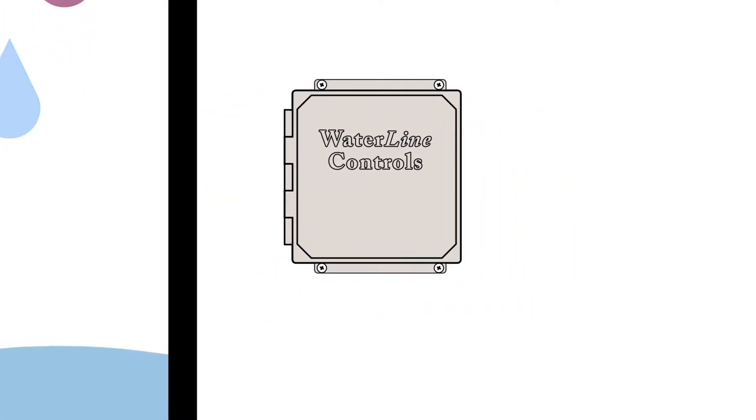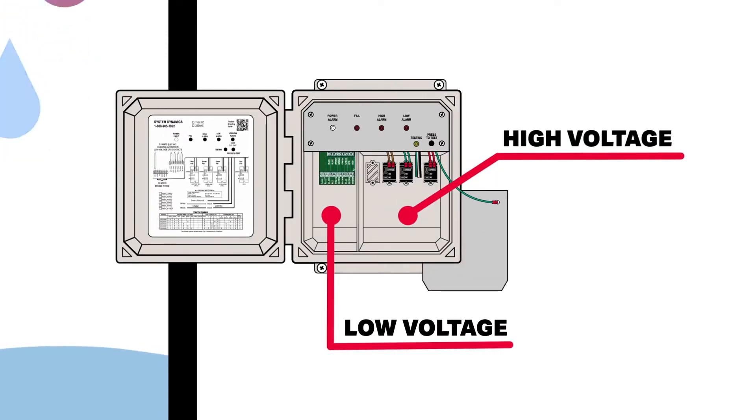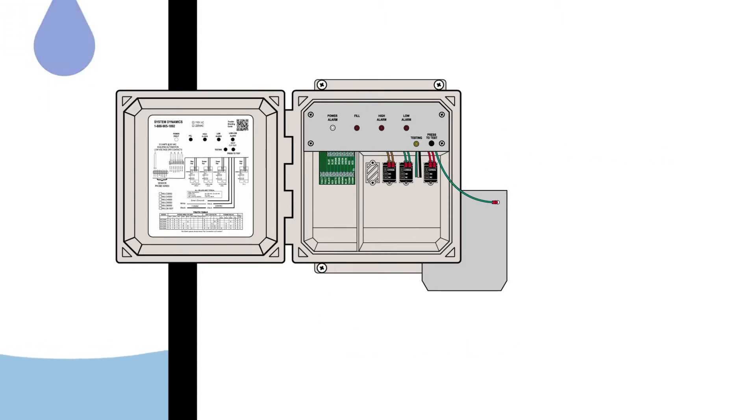When running metal conduit, keep note of the high voltage and low voltage compartments in the waterline panel. It's important to not cross high voltage conduit with low voltage conduit in order to avoid inductive electrical interference.